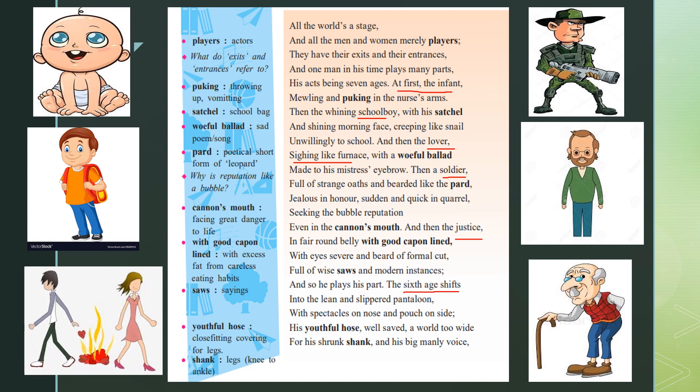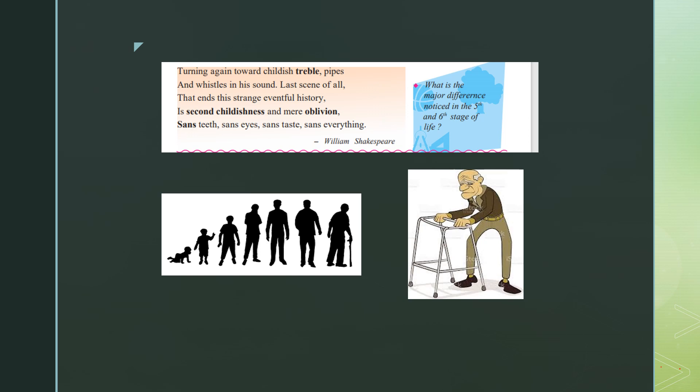The sixth age shifts into the lean and slippered pantaloon, with spectacles on nose and pouch on side. His youthful hose, well saved, a world too wide for his shrunk shank, and his big manly voice turning again towards childish treble, piping and whistling in his sound. Last scene of all, that ends the strange eventful history, in second childishness and mere oblivion — oblivion means unaware of the surroundings — sans teeth, sans eyes, sans taste, sans everything. So basically no teeth, no eyes, no taste — he is awaiting death.